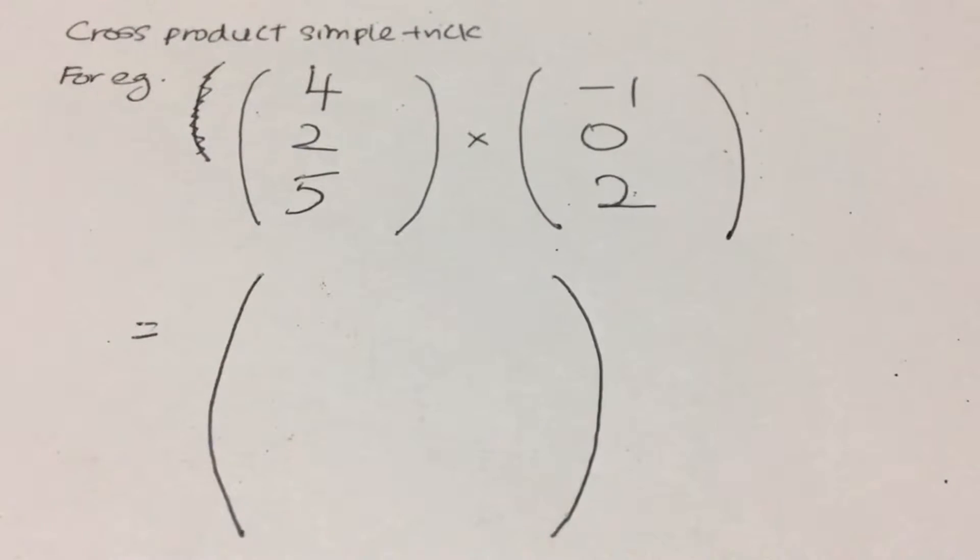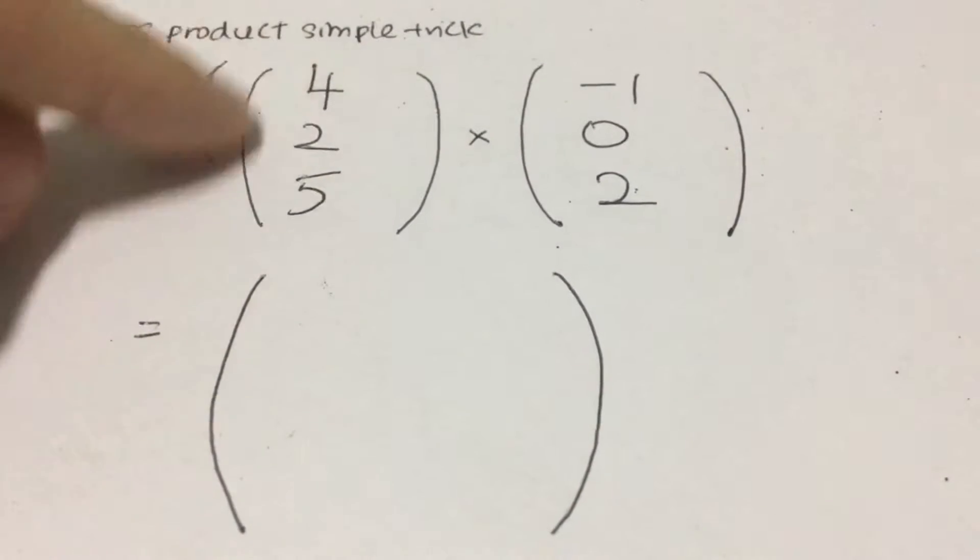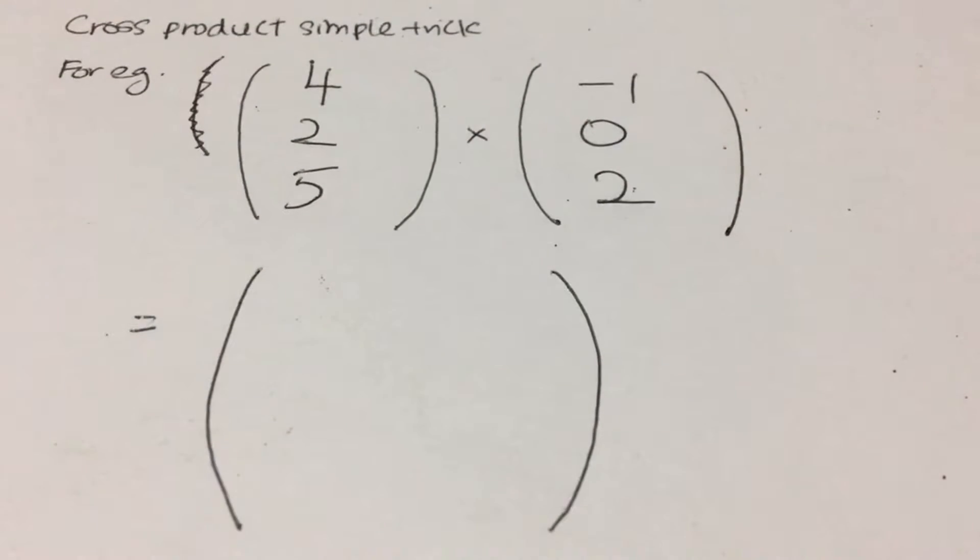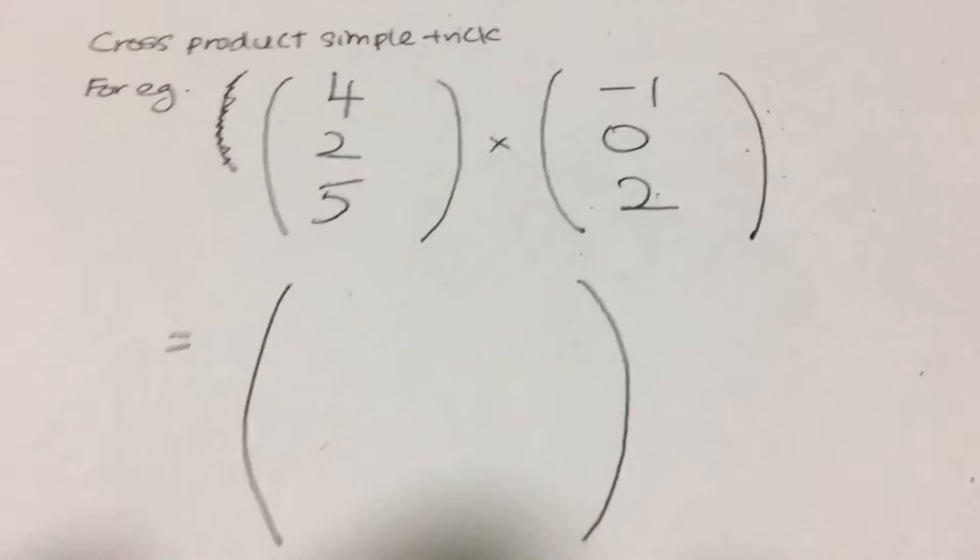Well, let us find out. So let's say for example, I have two vectors. Vector a is 4, 2, 5 and vector b is negative 1, 0, 2. And I want to find out the cross products of the two vectors.